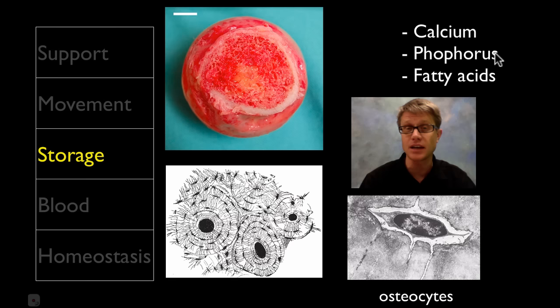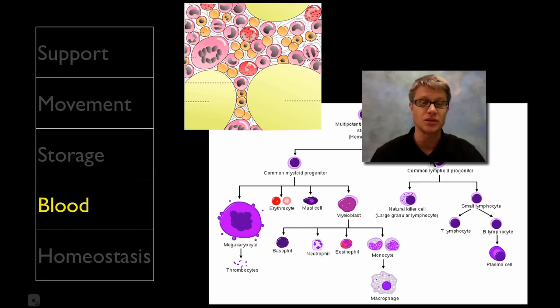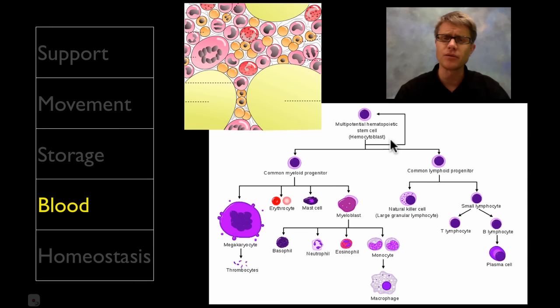Bone is also super important in blood production. If we're looking at the marrow, we have what are called multipotent stem cells — cells that could become any other cell. Look at all the cells they can become: they can be erythrocytes, which are red blood cells, but they can also become macrophages and lymphocytes as well.